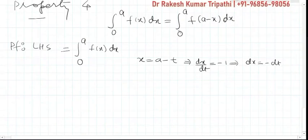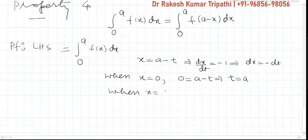Now let's change the limits as per our substitution. So when x is 0, 0 is equal to a minus t implies t is equal to a. And when x is equal to a, a is equal to a minus t implies t is equal to 0.